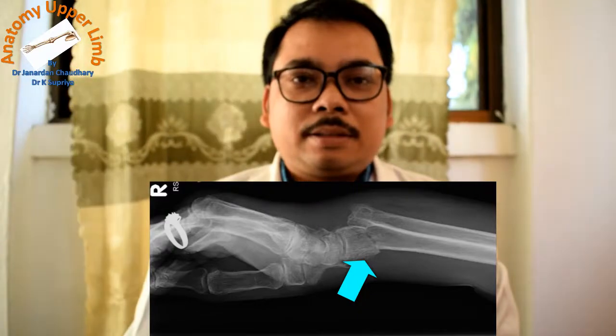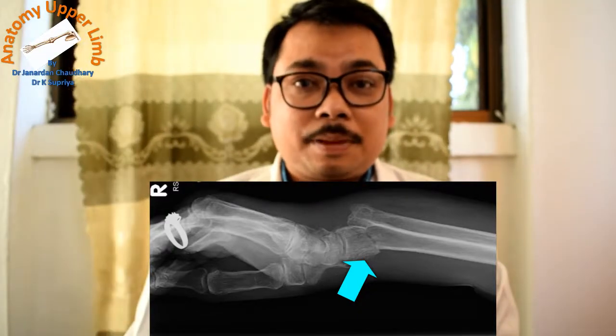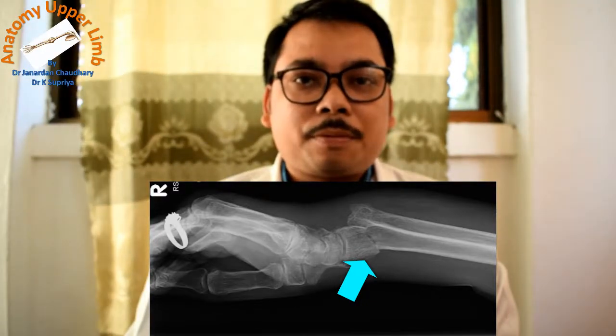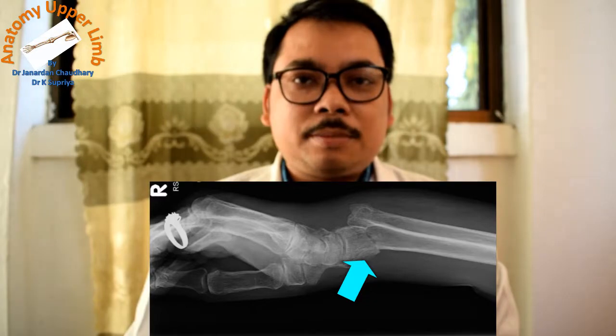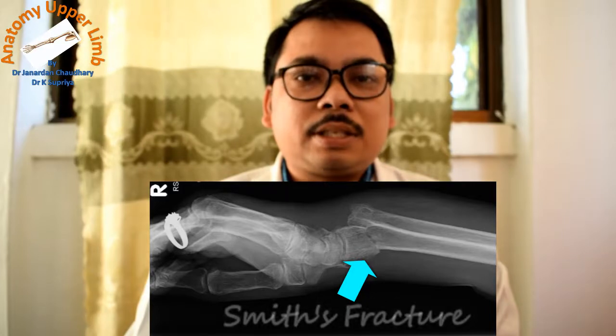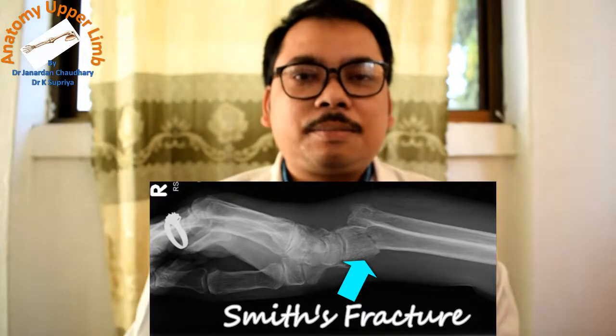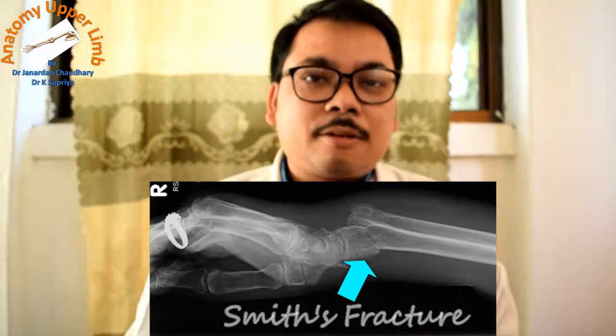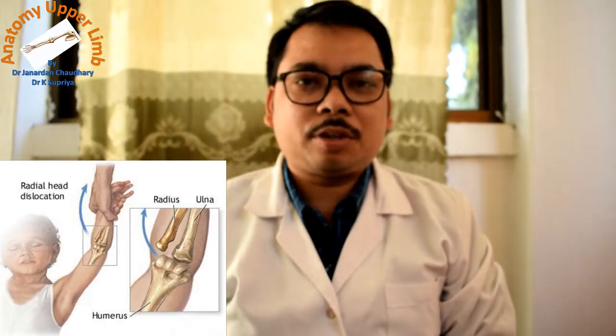Colles' fracture can also be called dinner fork deformity. If the distal segment of the fracture displaces proximally and the styloid process of the radius is proximal to the styloid process of the ulna, then this condition is called Smith's fracture, which is quite opposite to Colles' fracture.